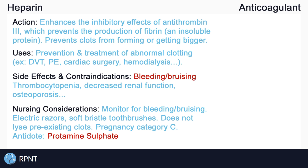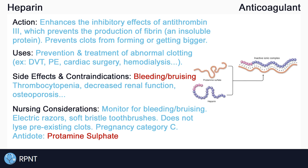Heparin is rated pregnancy category C, and there is some conflicting information regarding heparin safety during pregnancy, so exercise caution here. The antidote for heparin is protamine sulfate, which works by binding to heparin so that it no longer has anticoagulant effects.